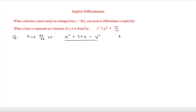That will make more sense when we look at it in a question. This one says: find dy/dx of x² + 2xy + y². We are going to take each of the terms and differentiate them, then put it all together at the end. Starting with x², that is the easy one — it simply goes to 2x.